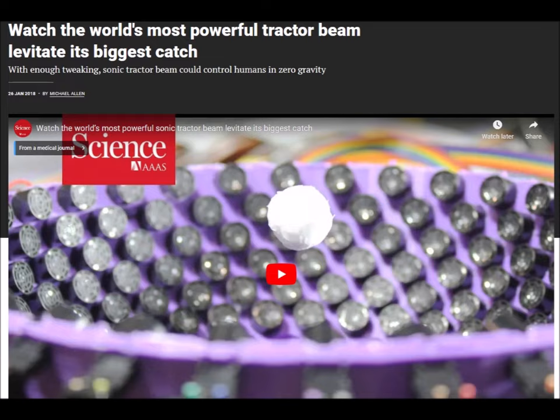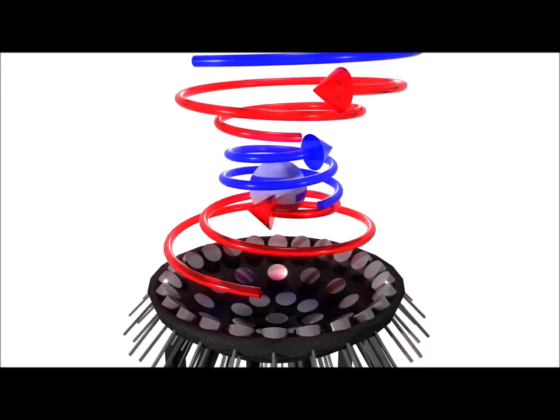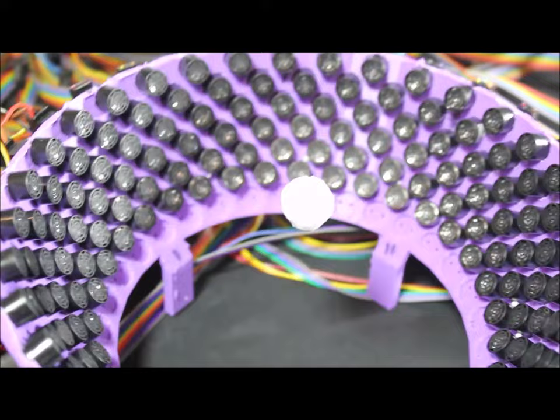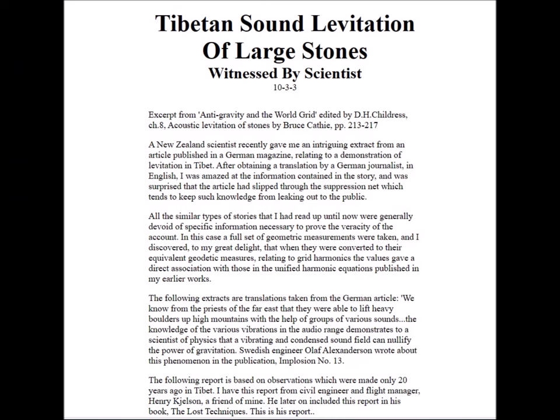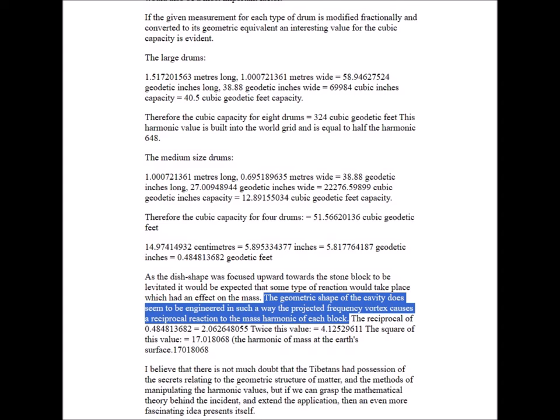Another type is the recent acoustic tractor beam device which uses an acoustic vortex. This vortex, created by 52 miniature speakers, enables the flotation of objects that are normally too big to lift and hold using the interference pattern method. The acoustic vortex has also been postulated on a megalithic scale in the well-known Tibetan levitation account.